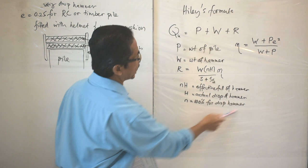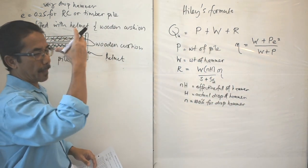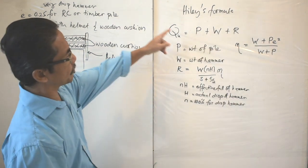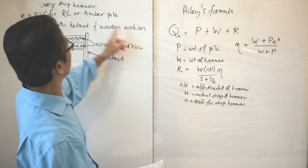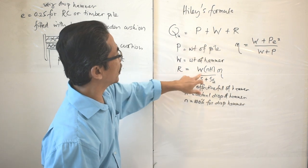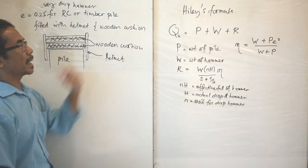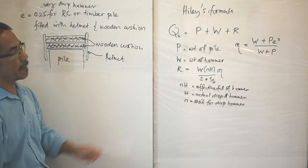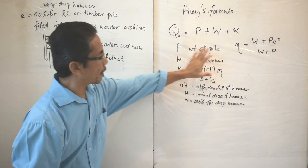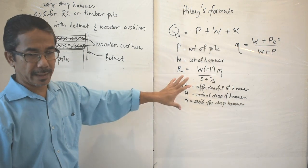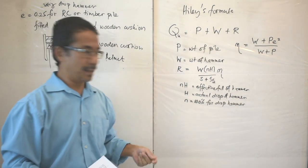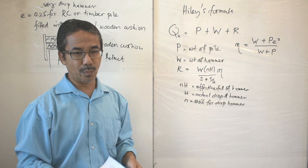In summary, R is about the energy transfer from the hammer to the pile and to the ground. The parameters needed in the Hiley equation are: P, W, e, H, c, and η. All of these parameters can be obtained on-site during the driving of the pile.